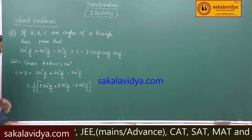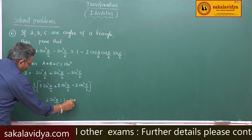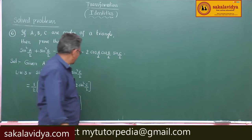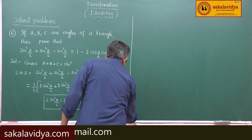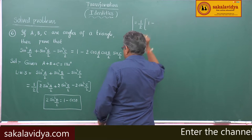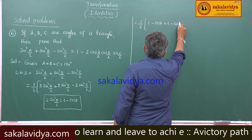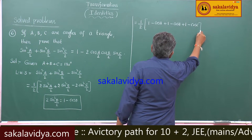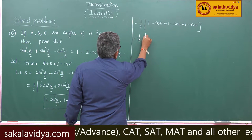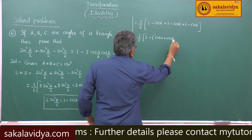We have the formula for 2sin²(θ/2): 2sin²(θ/2) is nothing but 1 minus cosθ. We have discussed this in multiple and submultiple angles episodes. Now this can be written as 1/2 into (1 minus cosA) plus (1 minus cosB) plus (1 minus cosC), which gives 1/2 into (3 minus cosA plus cosB plus cosC).